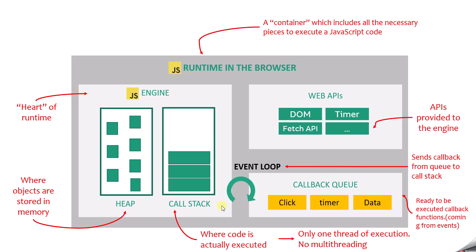The event loop will push a callback function from the callback queue to the call stack only when the call stack is empty — meaning all functions have completed their execution and returned. Once the call stack is empty, the event loop pushes the callback functions from the callback queue one by one into the call stack for their execution.